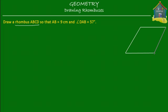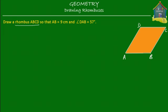So let's suppose this is the rhombus that we have to draw. Let's call it ABCD. In this rhombus, side AB will be 9 cm, BC will also be 9 cm, CD will be 9 cm, and so will AD. They will all be equal to 9 cm — all these sides are equal.